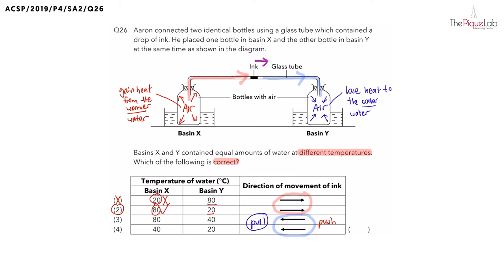So, let's take a look at option three. Is 80 degrees Celsius cooler than 40 degrees Celsius? No, which means option three is out. And lastly, for option four, is 40 degrees Celsius cooler than 20 degrees Celsius? Also no. That means the correct answer must be option two.